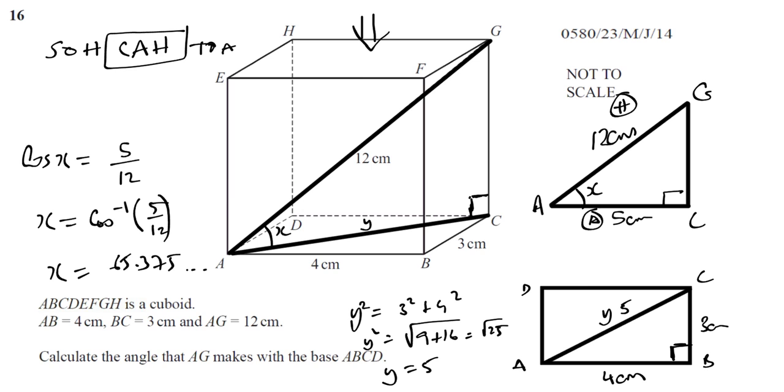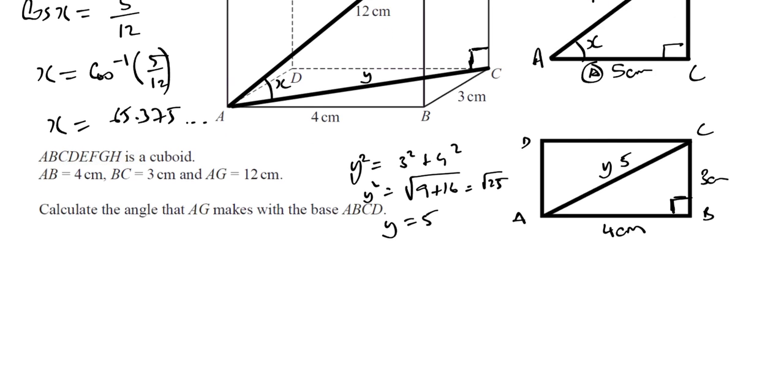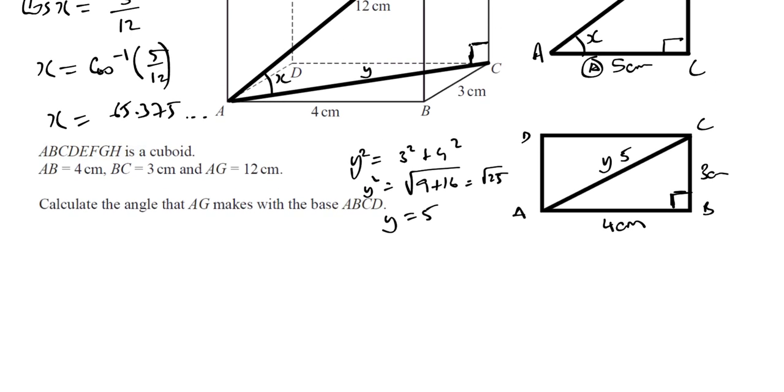65.375 continues on, so we have to write our answer. It doesn't tell us how to write the answer, so we write our answer as 65.4 degrees to one decimal place, and there we have the answer for this question. Thank you very much for listening.